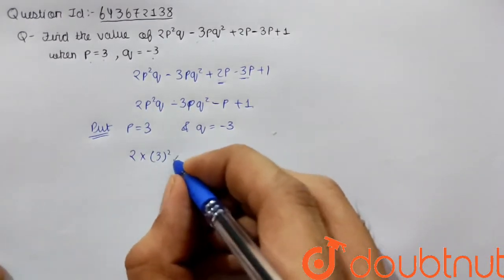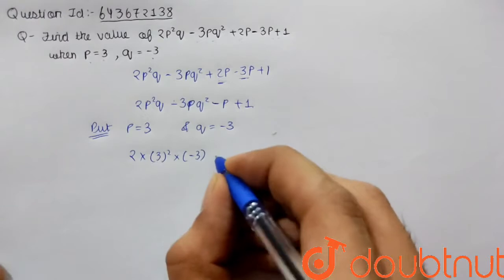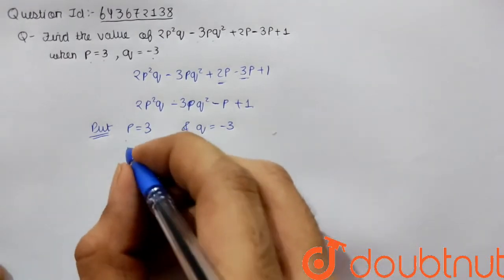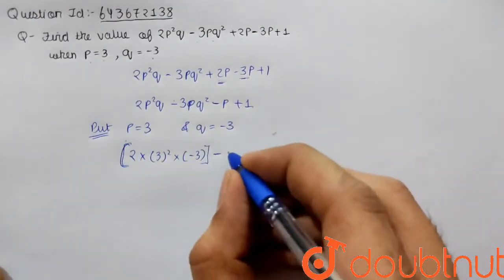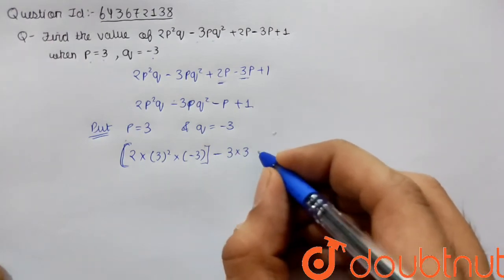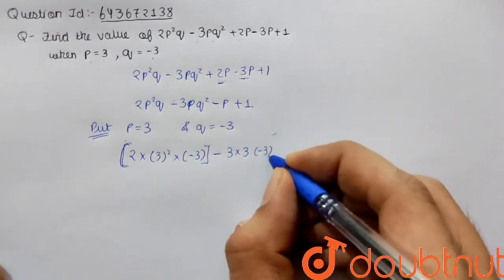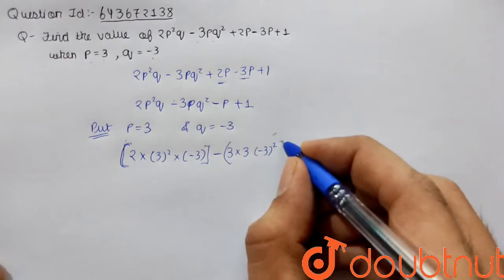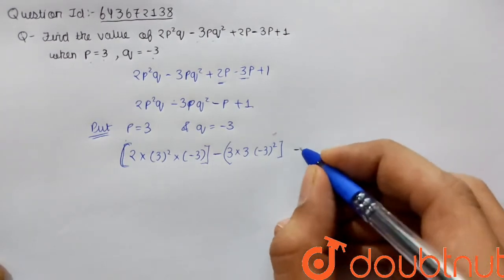This will be 2 × p² (which is 3²) × q (which is -3). This is a single term. Then minus 3 × p (which is 3) × q² (which is (-3)²). This is the second term.